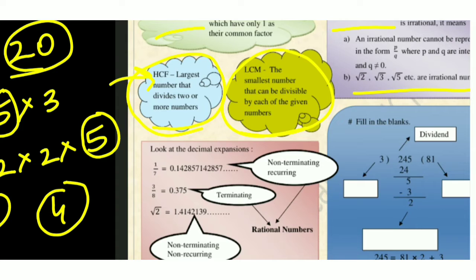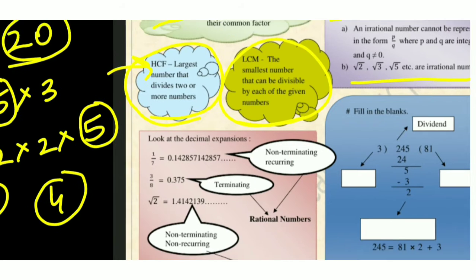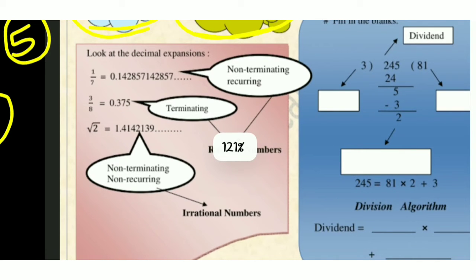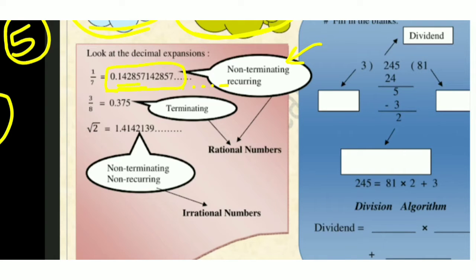Now let's look at decimal expansion. For 1/7, the decimal expansion is 0.142857142857... — the division does not end, so it is non-terminating. Also, the group of digits 142857 repeats, so it is recurring. Therefore, 1/7 has a non-terminating recurring decimal expansion, and it is a rational number.